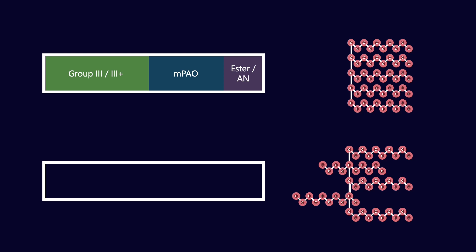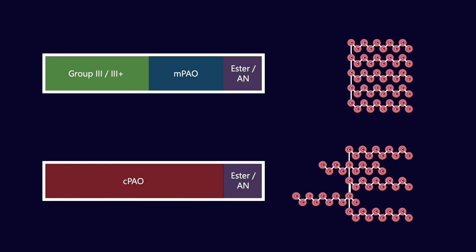Now, you could compare that - that would be considered by some people to not be 100% synthetic, because there is some group three elements in it. Compare that with what we would consider 100% synthetic, which has 100% CPAO, as well as the same co-base of ester and alkylated naphthalene. Now, these two base oil packages may have very similar performance. That's why it's a little bit difficult to make conclusions about performance purely based on whether something is synthetic or mineral.